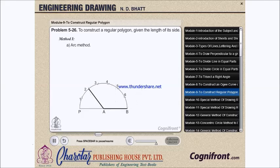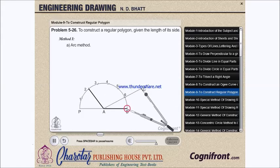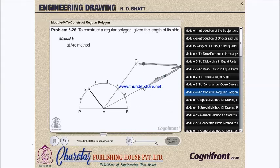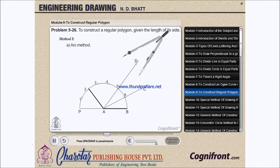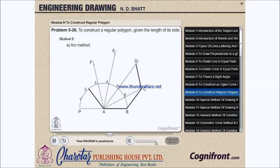Arc method. With center B and radius AB, draw an arc cutting the line A6 produced at C. With center C and the same radius, draw an arc cutting the line A5 produced at D. Find points E and F in the same manner. Draw lines BC, CD, etc., and complete the heptagon.